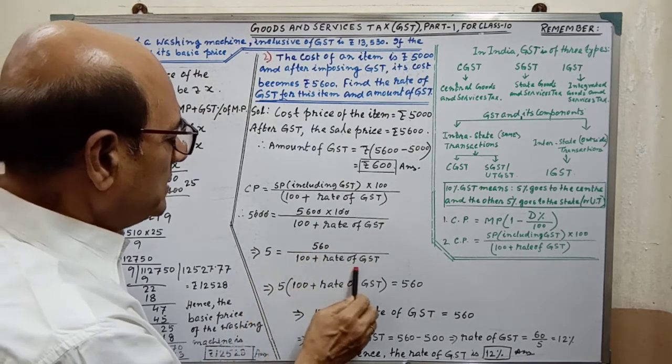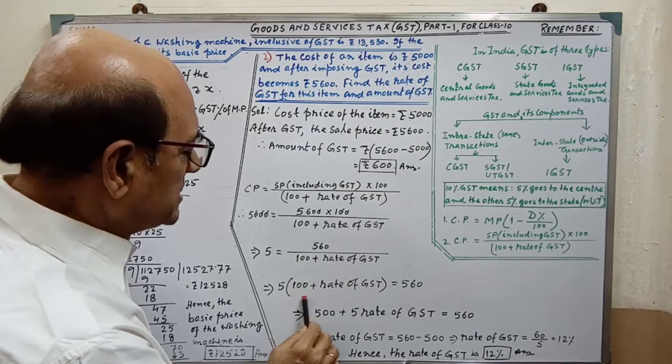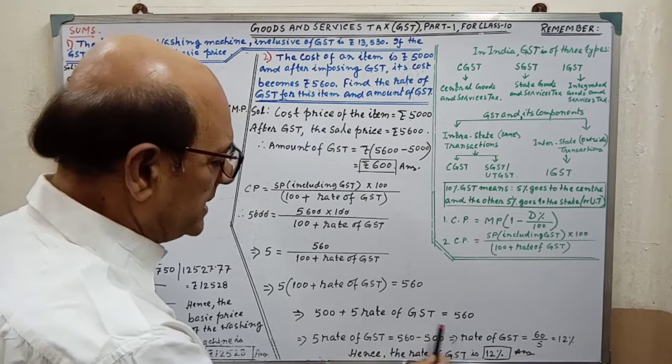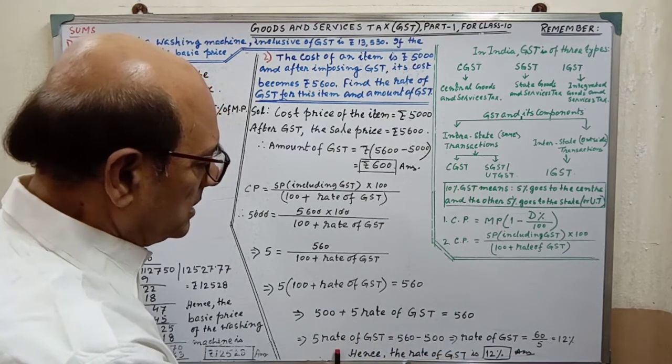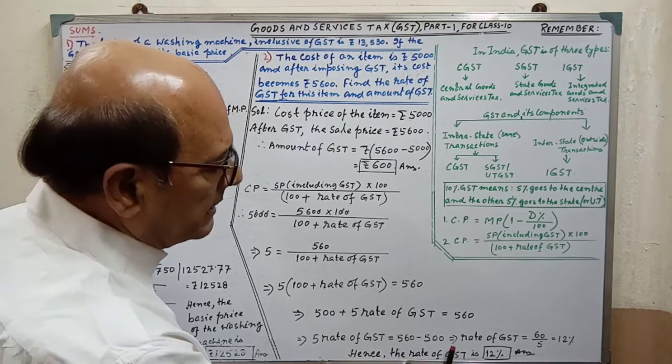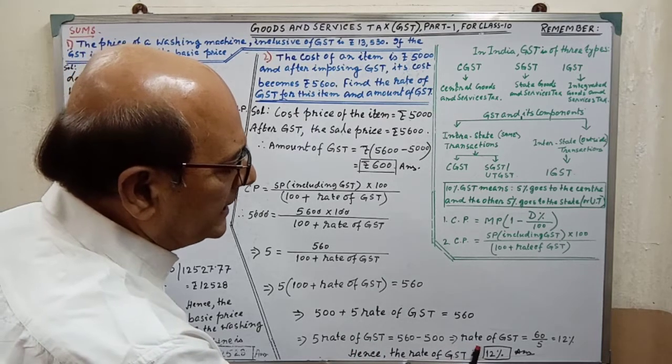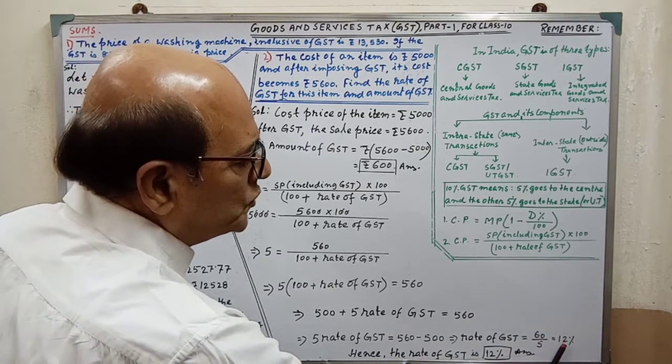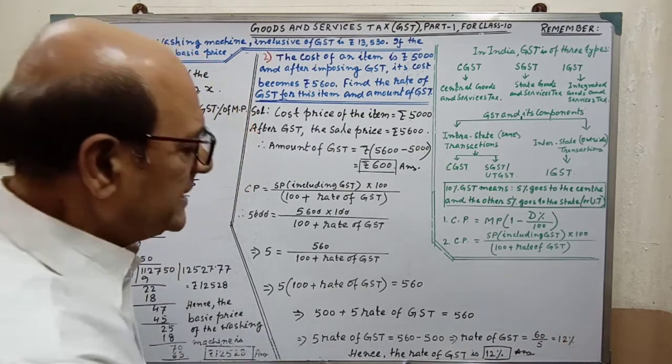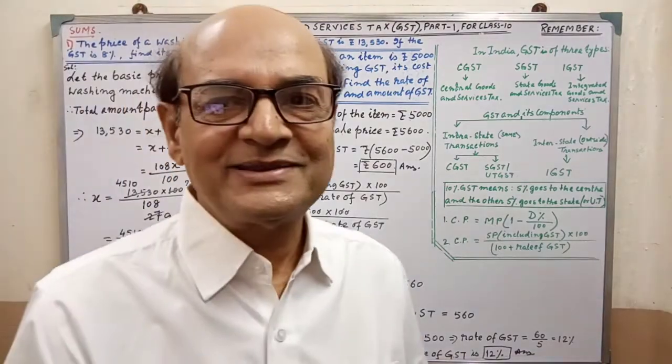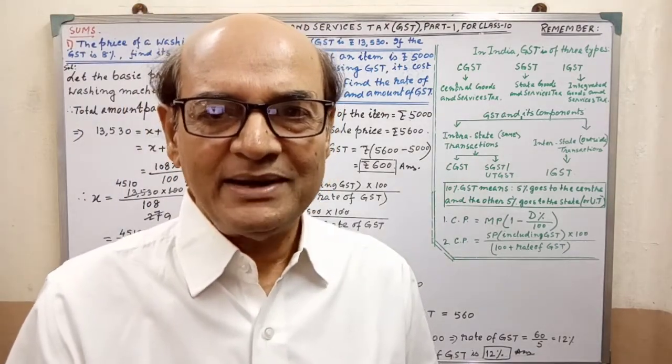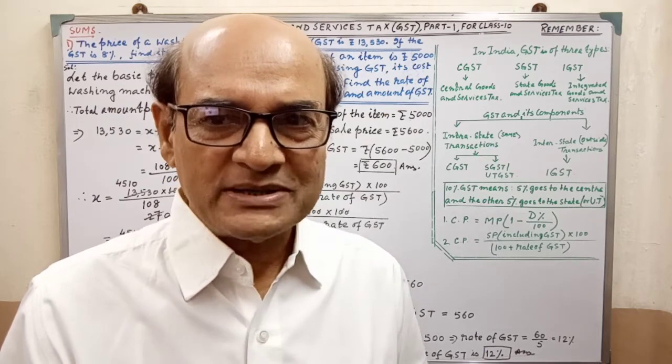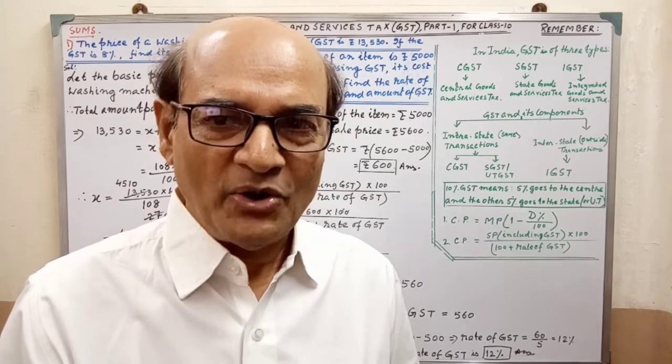By calculation we have to notice the step attentively. By following the step easily you will understand. This is a very simple calculation. Finally we are getting rate of GST equal to 60 by 5, that is 12 percent. Hence the rate of GST is 12 percent. Sum is completed. If you feel difficulties then you must pay attention on the solution again.